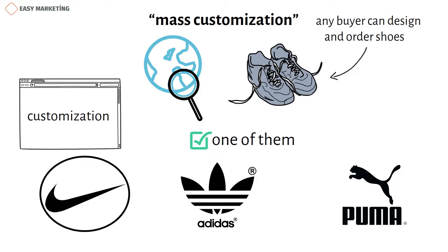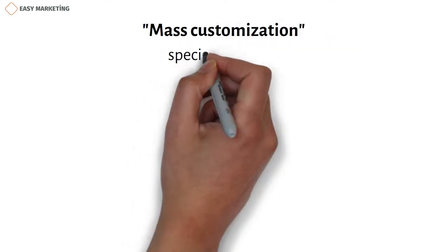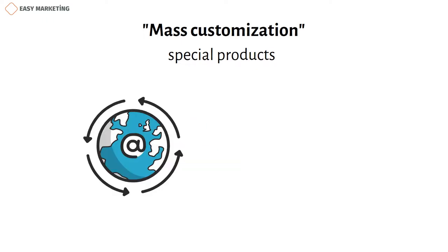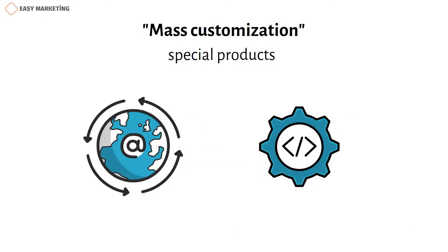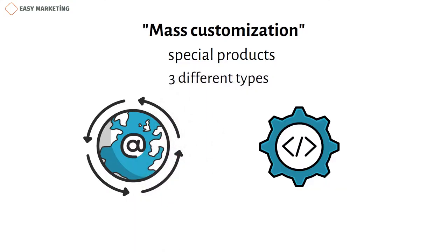As can be understood from the previous example of Nike, companies that choose the mass customization production system produce special products for each customer. Of course, the increase in the use of the internet and the development of technology have a positive effect on this production system. There are three different types of this production system that are widely used.